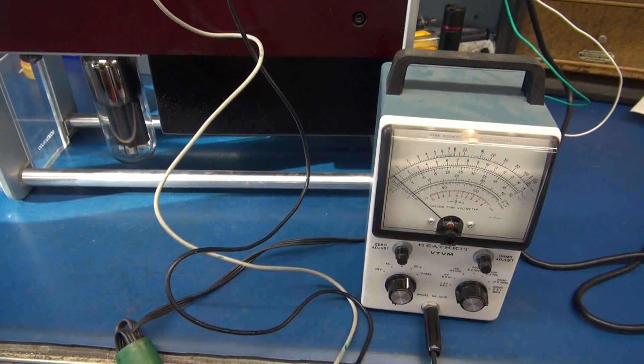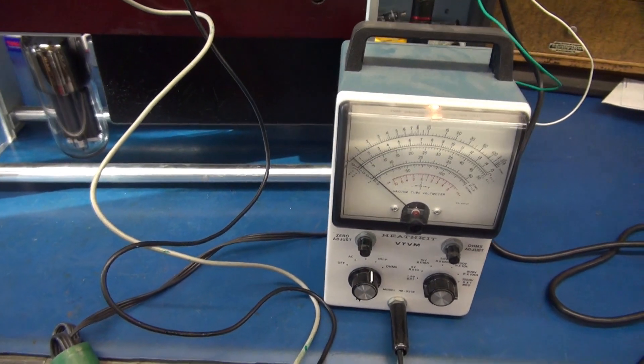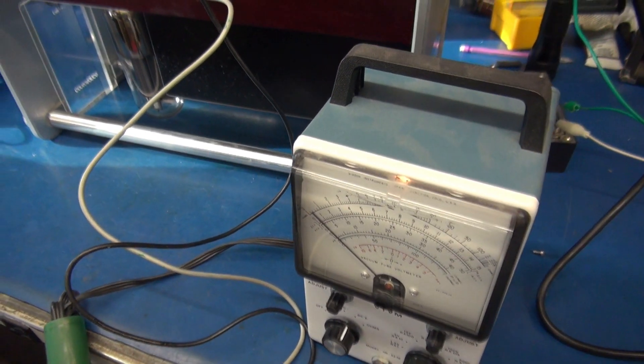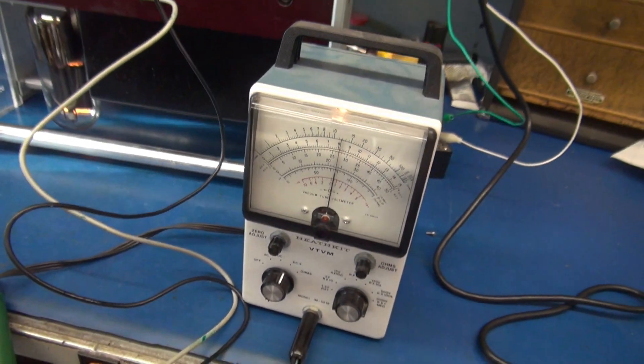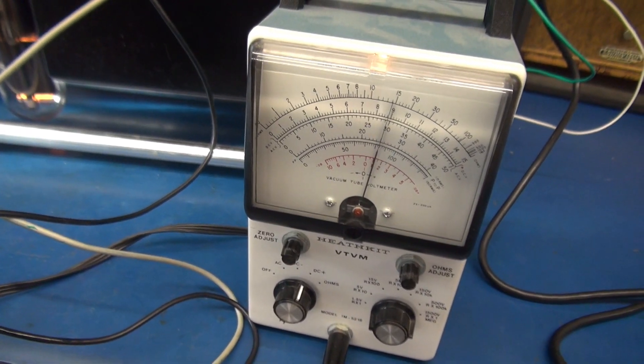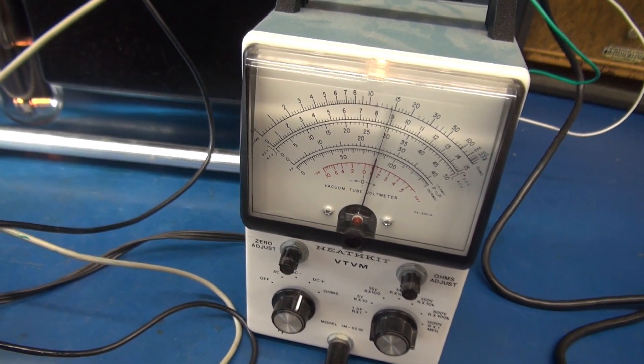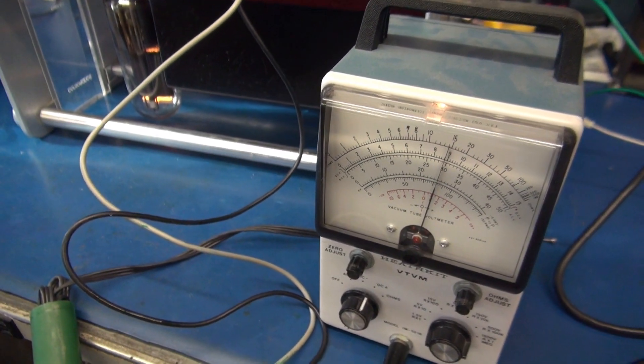Alright, I'm going to check the high voltage on this amplifier using this Heathkit VTVM, which is good to 1500 volts. And I'm seeing approximately 900 volts DC. So the high voltage is okay.